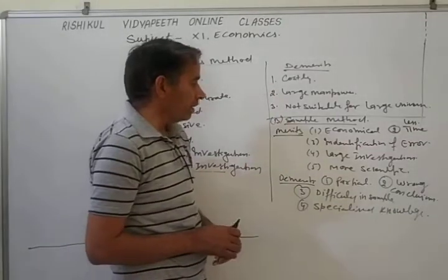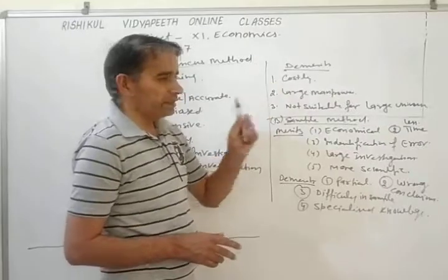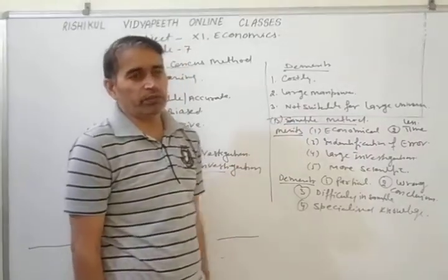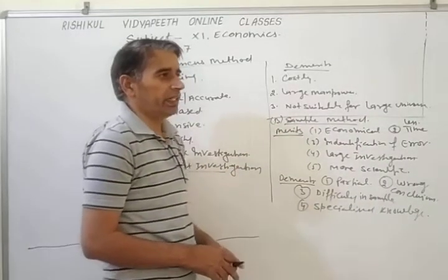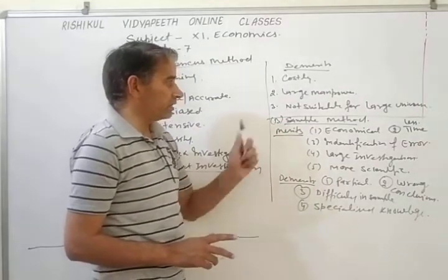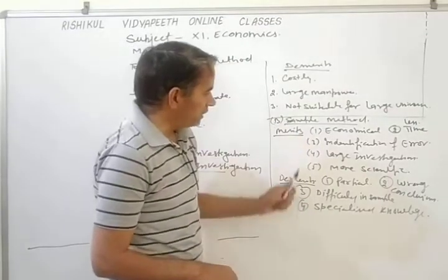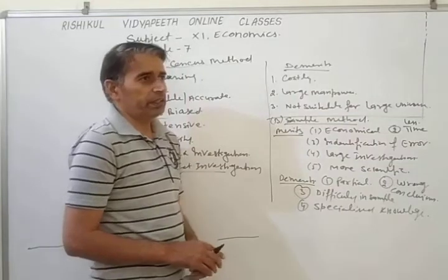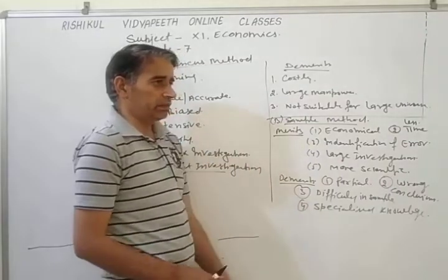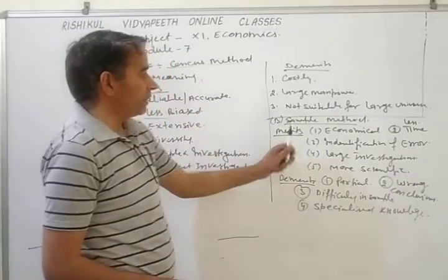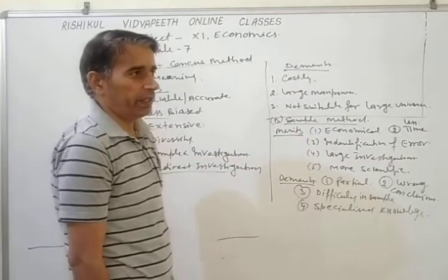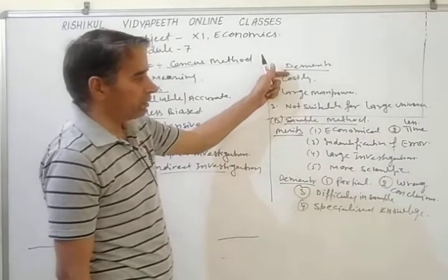In the context of these methods, another method is the sample method. Under the sample method, only some units from the population or universe are selected which represent the entire population. That method is called sample method. Today we discuss the merits and demerits of that method. Mostly these are the reverse of the census method. For example, the demerits of the census method become the merits of the sample method.